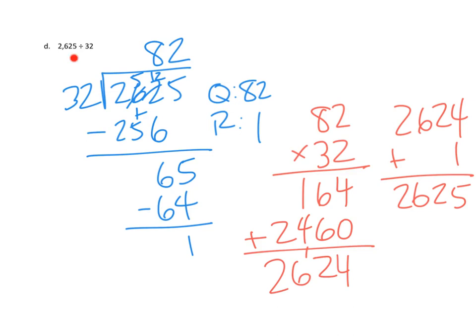And hey, 2,625. Perfect. So I'm going to consider that double-checked. And I've successfully done my division. 2,625 divided by 32 gives us a quotient of 82 and a remainder of 1. So thanks for joining us for another episode of Mr. Kung Has Problems. See you again next time. Take care.